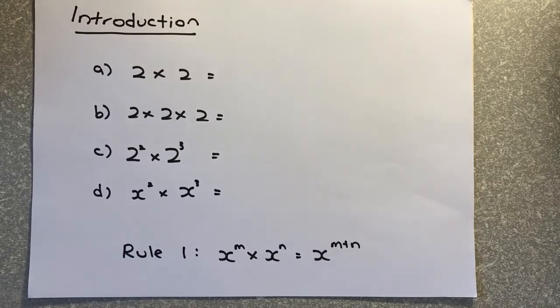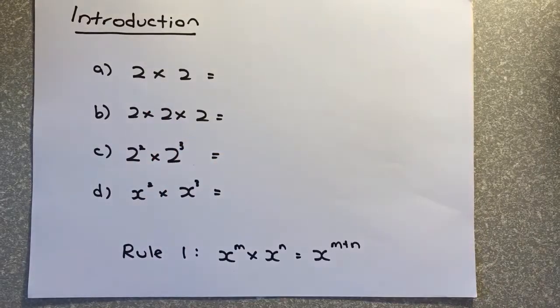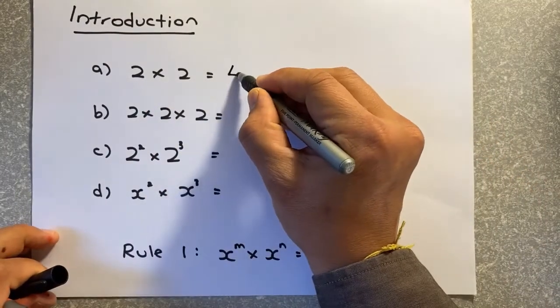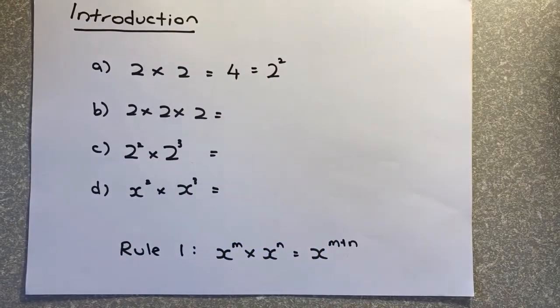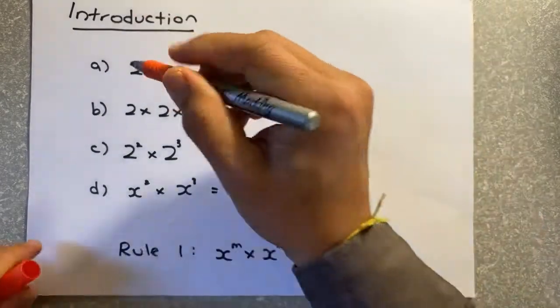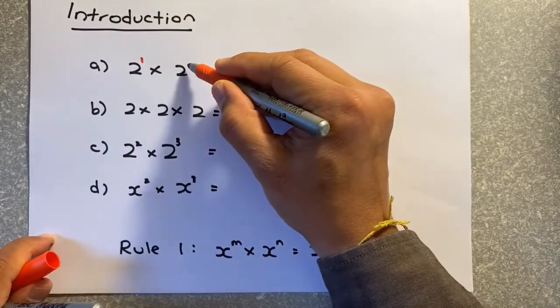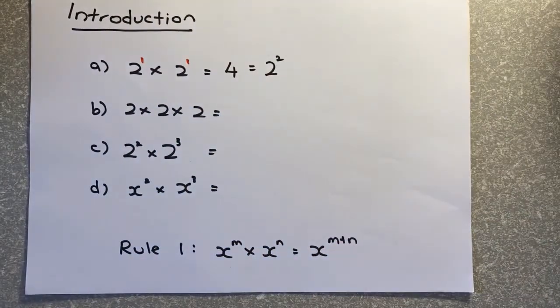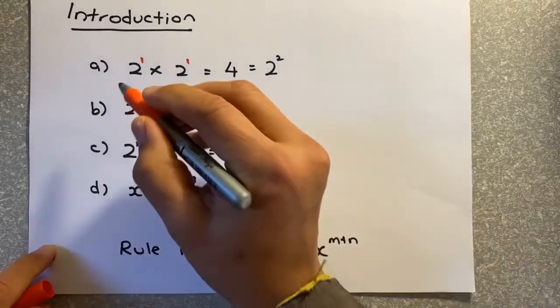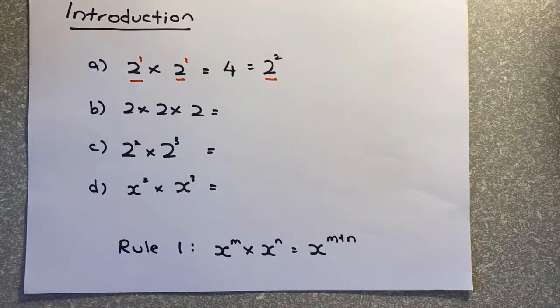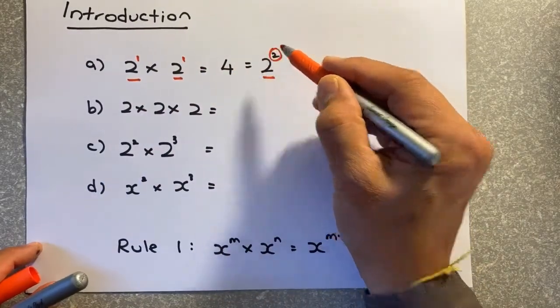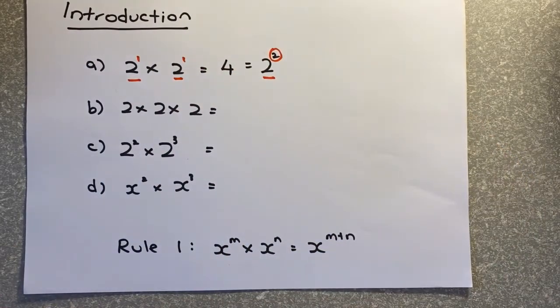So if I have 2 multiplied by 2, what you will get is 4, or you can simplify them as 2 to the power of 2. What it actually means is that 2 means 2 to the power of 1, and 2 here is also 2 to the power of 1. And what you do is that the base is the same, so the 2 remains, and you just need to add the power. So 1 plus 1 will give you 2, and that is how the power works.